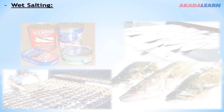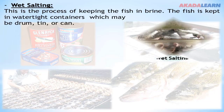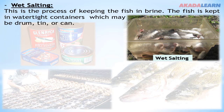We have wet salting, which is a process of keeping the fish in brine. The fish is kept in watertight containers, which may be drums, tins, or cans. Then we have smoking, which involves the use of low heat to reduce the moisture content of the fish. This method is usually used by local fish farmers.